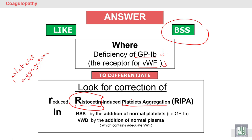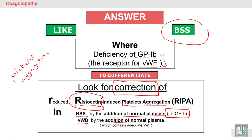But how to differentiate between Bernard-Soulier syndrome and von Willebrand disease? Bernard-Soulier syndrome can be corrected by addition of normal platelets, because the defect is in the platelet receptor glycoprotein 1b. While in von Willebrand disease, correction will occur by addition of normal plasma, because the defect is in the von Willebrand factor in the plasma.